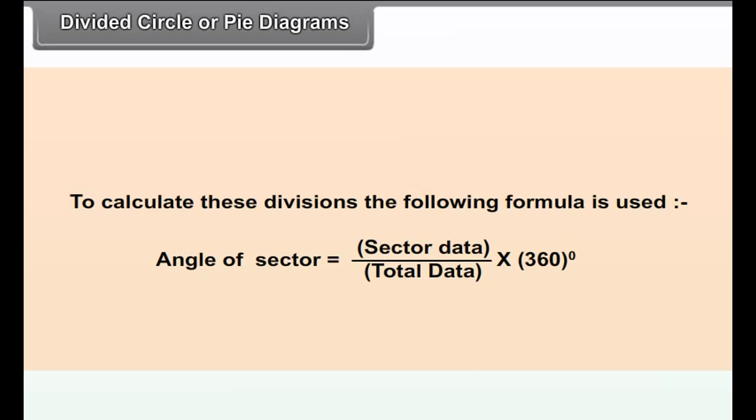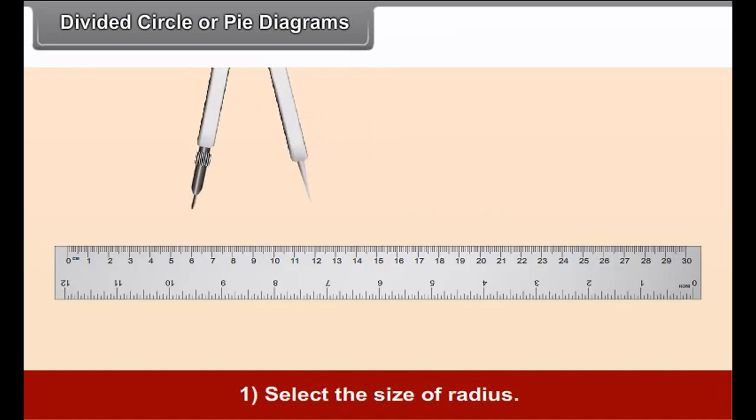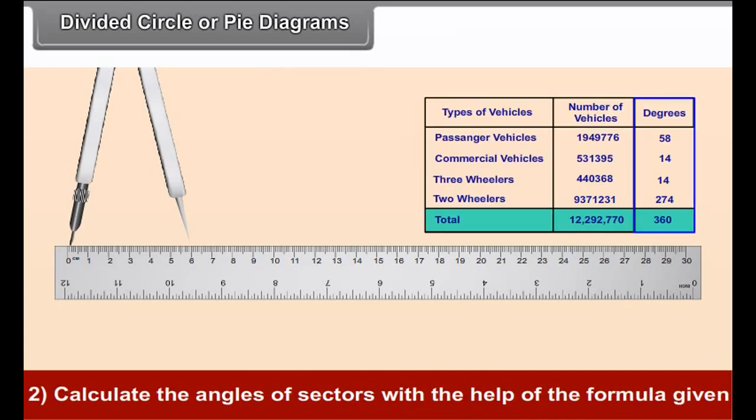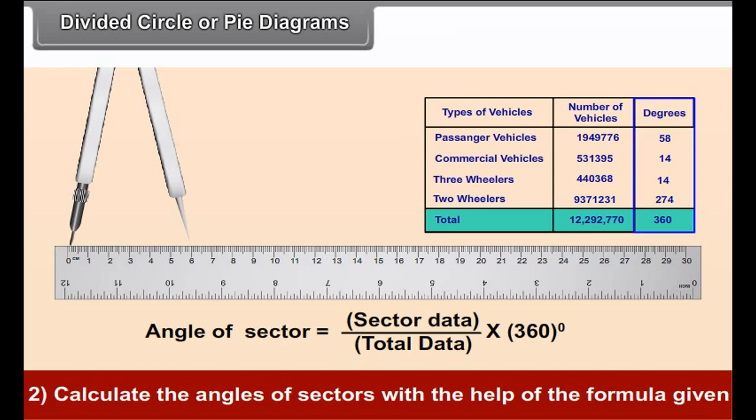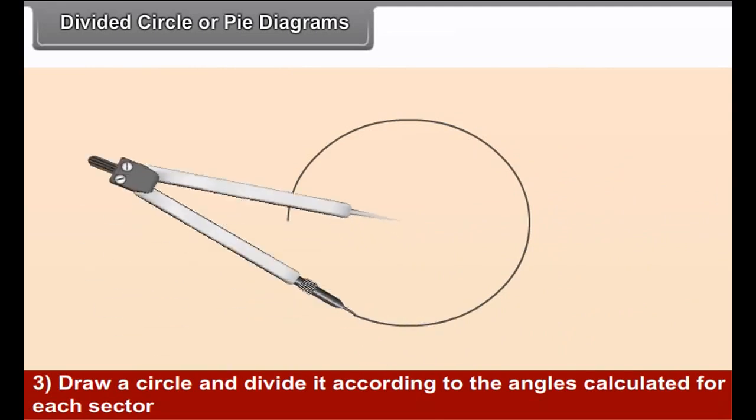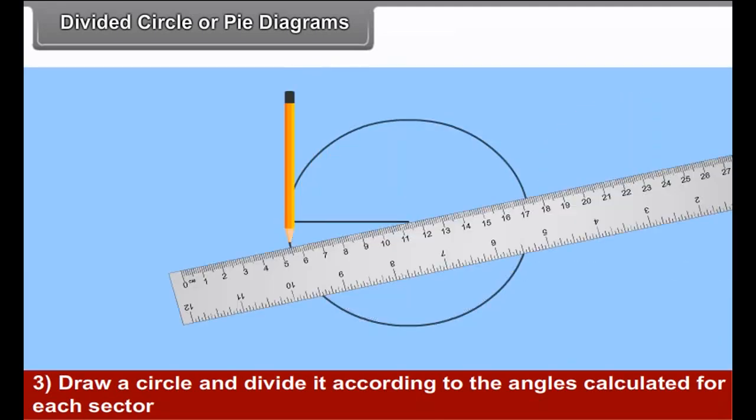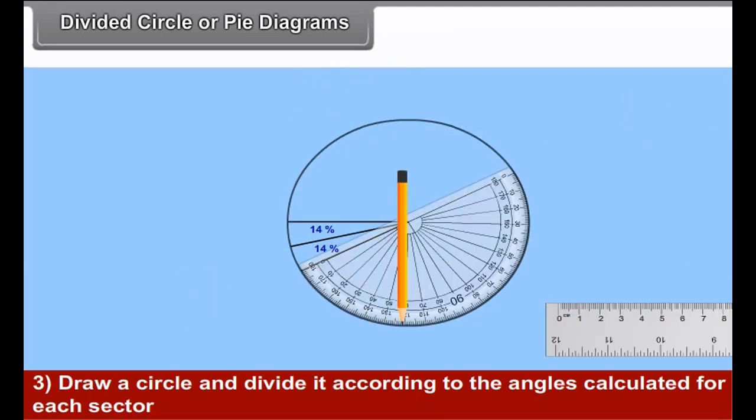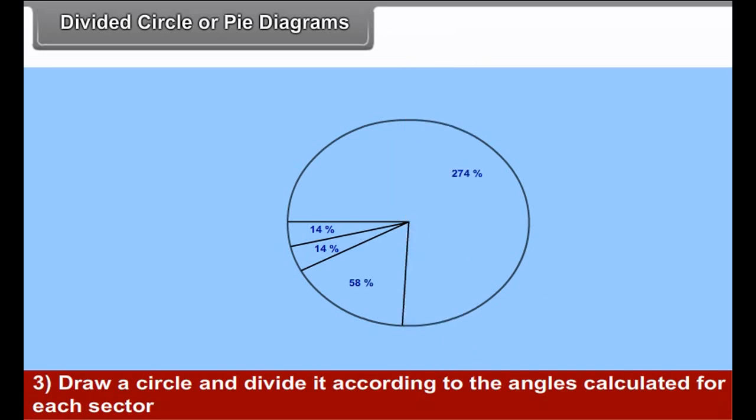9.6 Two-Dimensional diagrams. Circle diagram, square diagram, divided rectangle diagram and pie diagram are two-dimensional diagrams. This year, we are going to study only divided rectangle and divided circle, i.e. pie diagram.